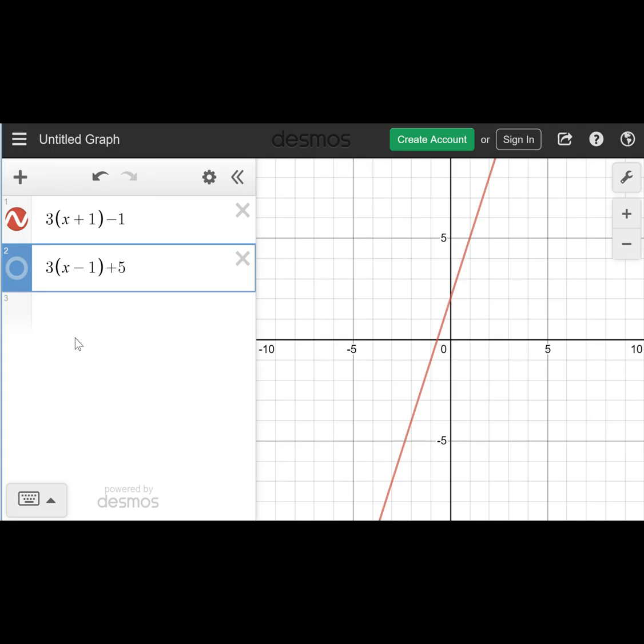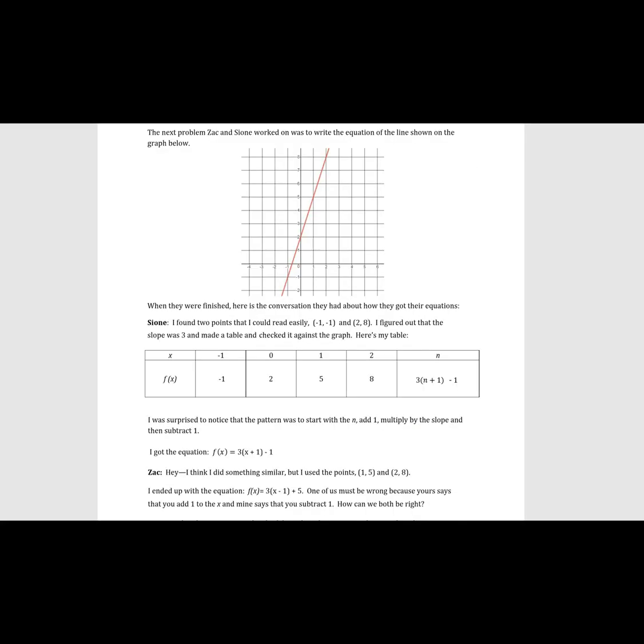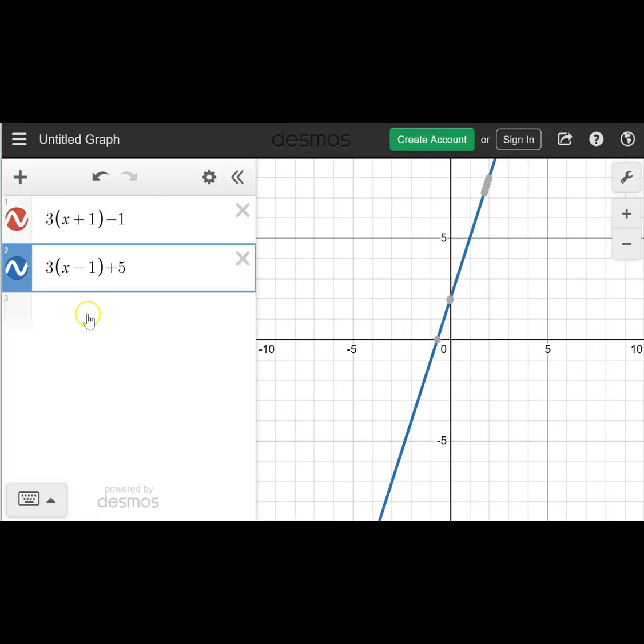And so it turns out they're both correct. They both have valid representations of this line that's graphed. And we can see that they're equivalent representations of the same line if we look at a graph of each line in Desmos. So here's Sion's line in red and there's Zac's in blue right on top of it. So they're equivalent because those lines are perfectly aligned, it's the same graph.